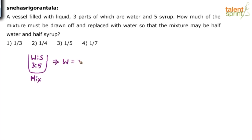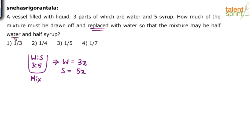Let us assume that water is three parts and syrup is five parts. How much of the mixture must be drawn off? From this, you are removing some mixture and replacing it with water. So let's say we remove q liters of mixture and add q liters of water, so that the mixture may be half water and half syrup.